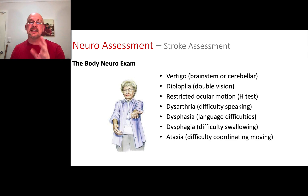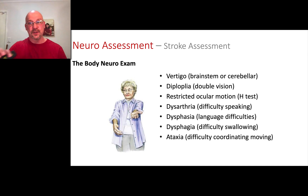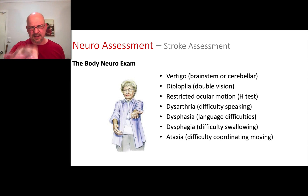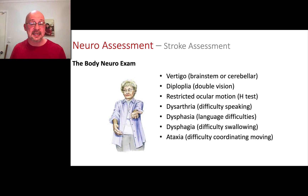The other thing we look for is ataxia — difficulty coordinating movement. If they're having trouble reaching for their bag, or showing intentional motor dysfunction, those are things we note as well. We know where the ataxia is and we describe what it is.